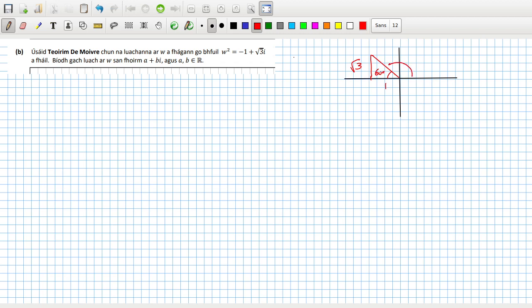So that means the angle I want, the argument, is 120 degrees. And then I can also calculate the r as the modulus, so that would be root of minus one squared plus root three squared, so that's two.